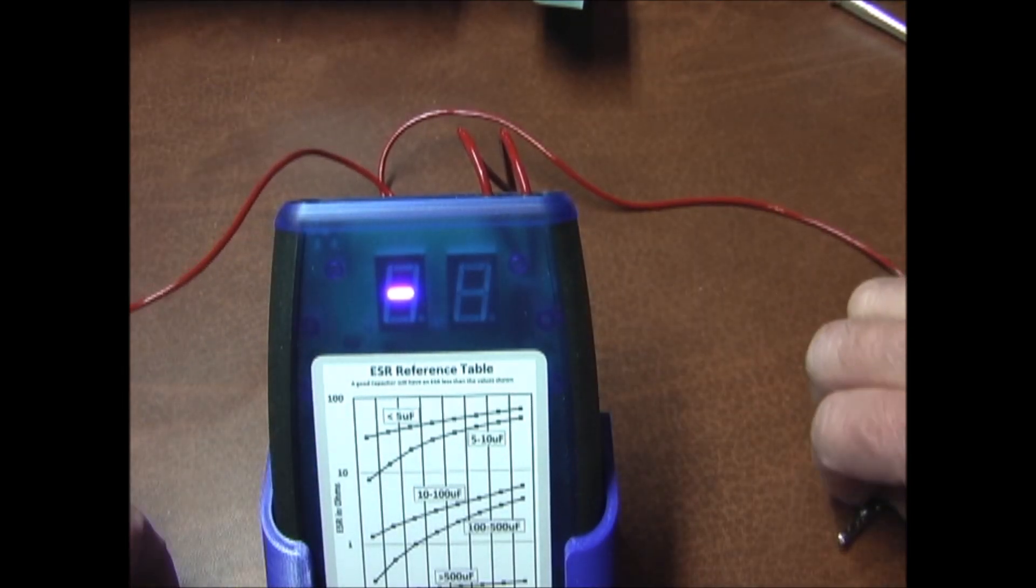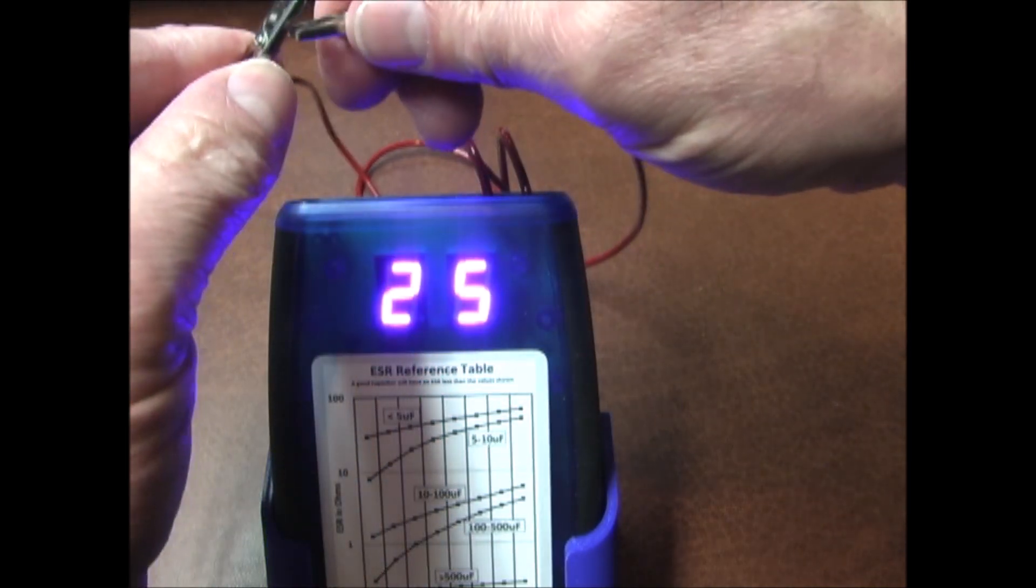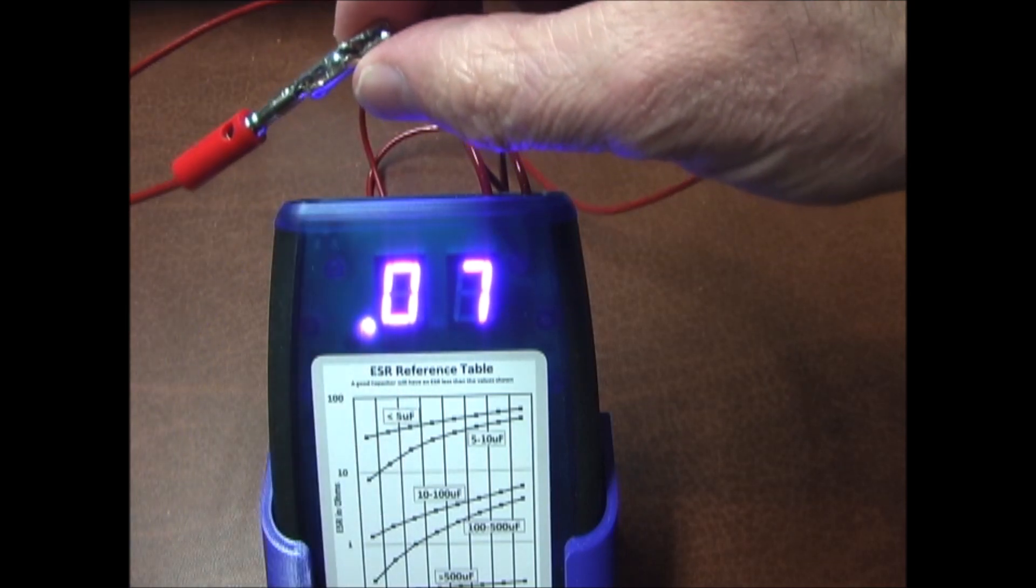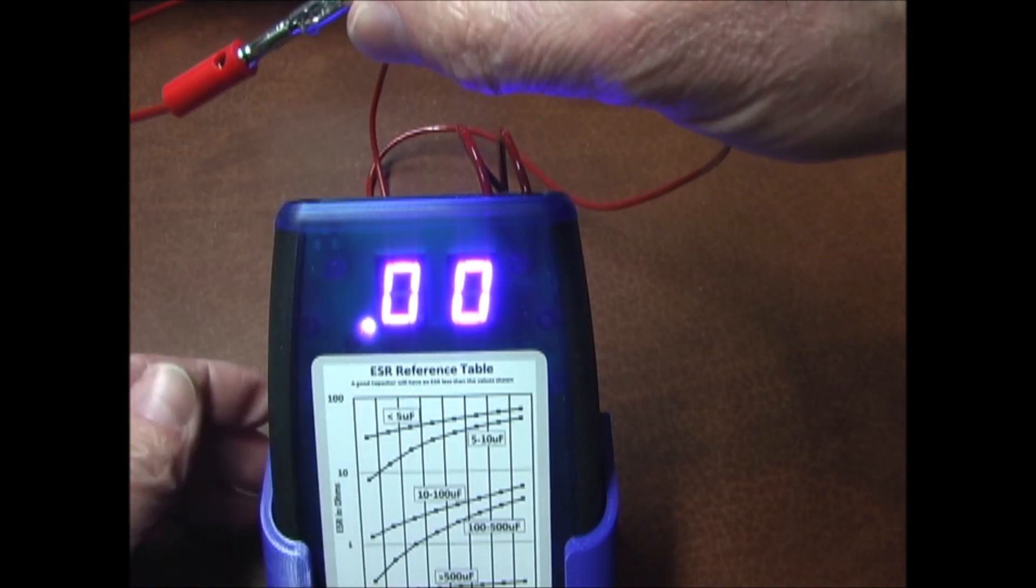To use the ESR tester, push the button on top once to turn it on, then connect the leads together. This will show you the resistance in the leads and wires. Push the button a second time to zero it out.